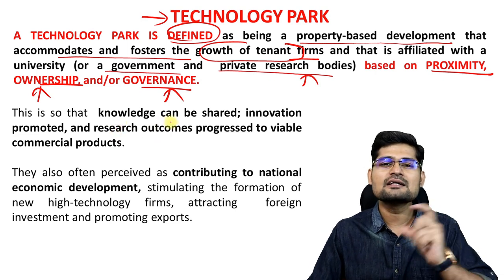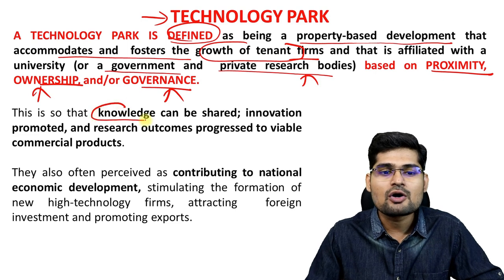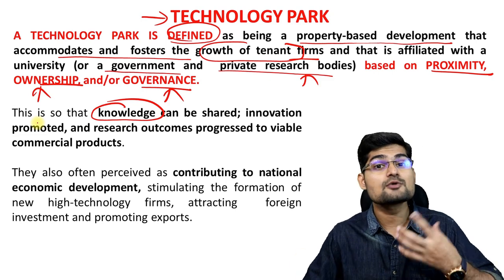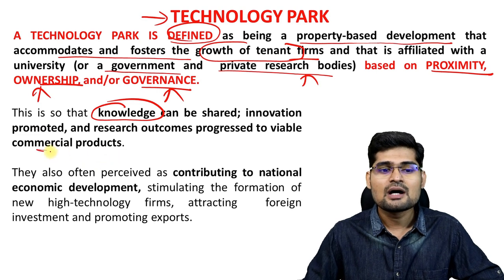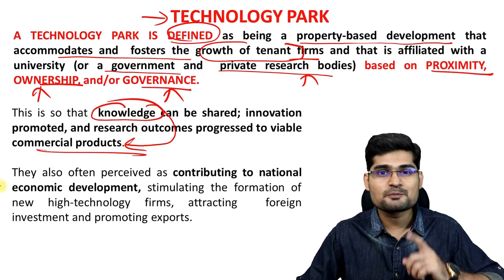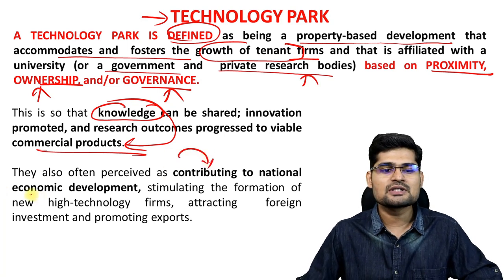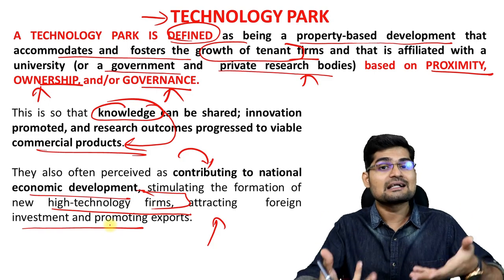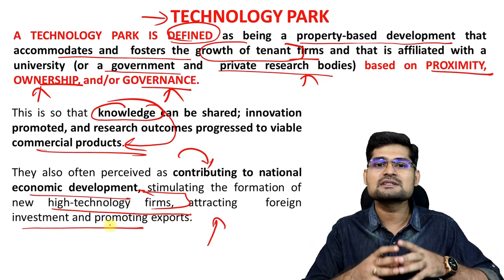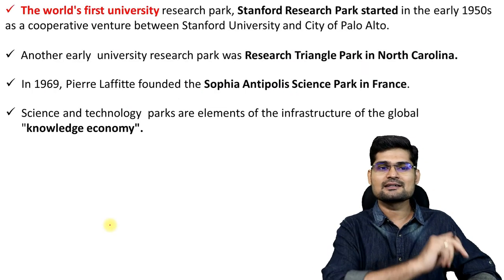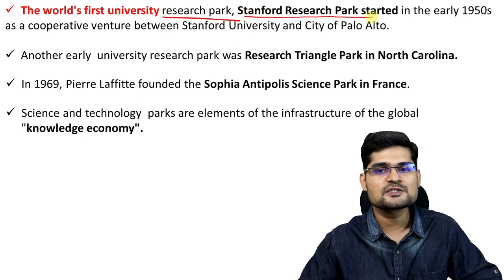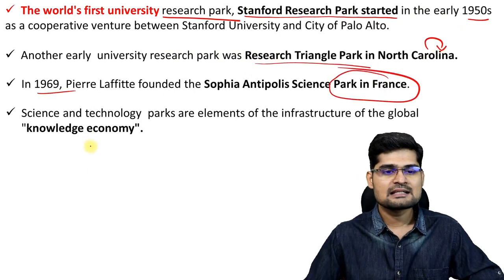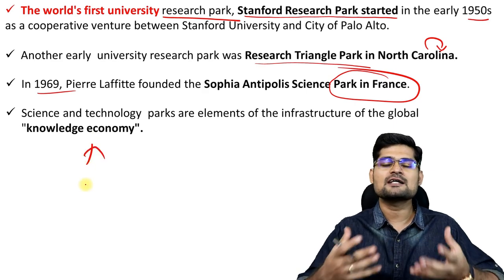The purpose of a technology park is a little different from a special economic zone. Here, the prime focus is knowledge sharing — agglomeration of different people discussing businesses, development, and research. Bringing knowledge to commercial production is the theme. It contributes to national economic development, stimulates the formation of high-technology firms, creates employment opportunities, and attracts investment, but the prime focus is knowledge partnership. The world's first university research park was Stanford Research Park, started in the 1950s, followed by Research Triangle Park in North Carolina, and in 1969 one in France.